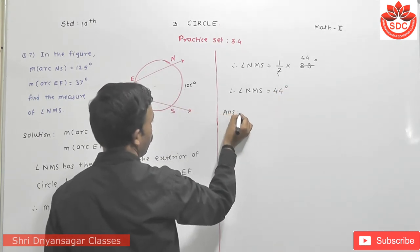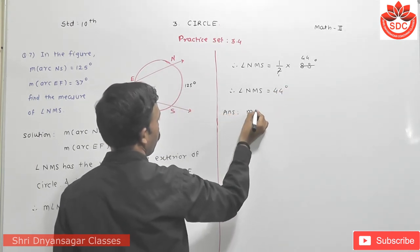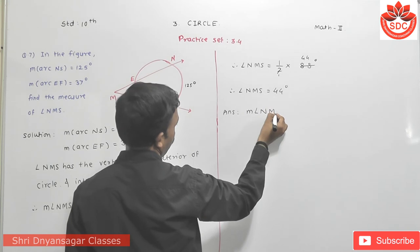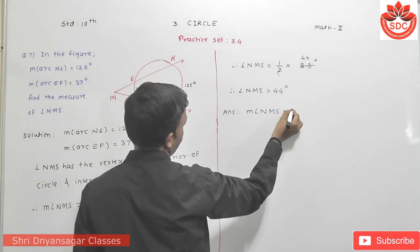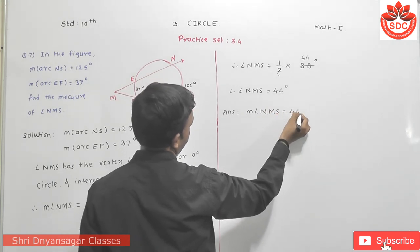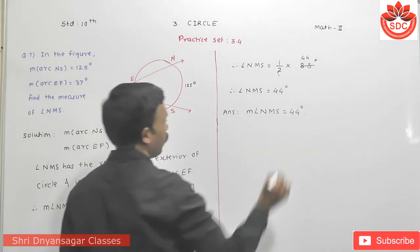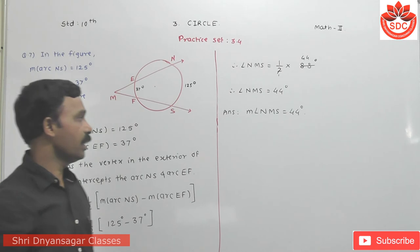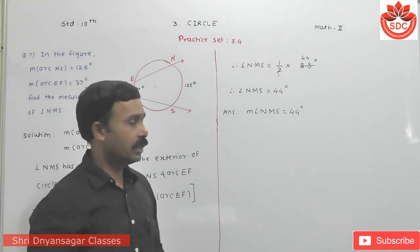Writing the answer in a full sentence: therefore, the measure of angle NMS is equal to 44 degrees. Can you understand this? We see the next question.